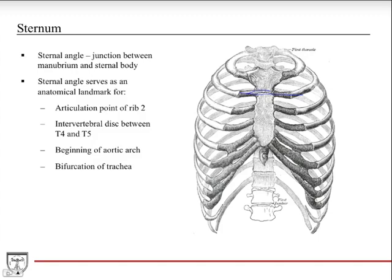What's more important about the sternal angle is it marks the beginning of the aortic arch. The aortic root comes off, then it starts to form the arch just above the sternal angle, and then the arch comes back down and becomes the descending aorta. Above the sternal angle, the aorta is considered the aortic arch. Just below it proximally is the ascending aorta, and distally below it is the descending aorta, which goes all the way into the abdomen.